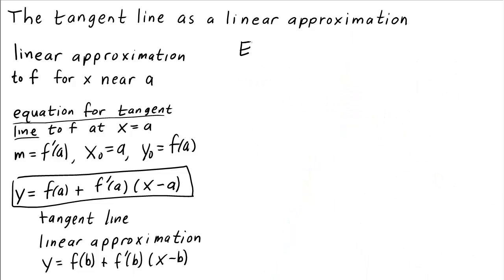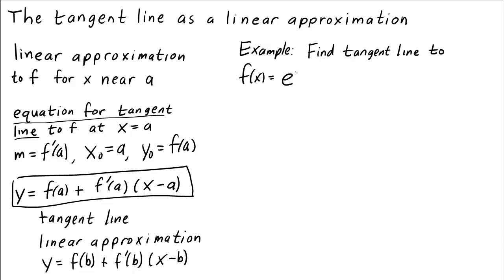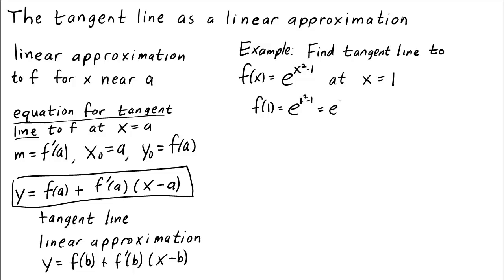Let's try an example. Let's find a linear approximation, or tangent line, to f of x equals e to the x squared minus 1 at x equals 1. We just need to evaluate the function and its derivative at x equals 1. Well, f of 1 is e to the 1 squared minus 1, which is e to the 0, which is just 1. Okay, that was easy.